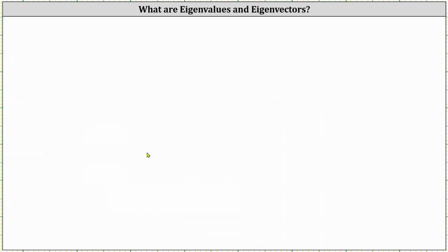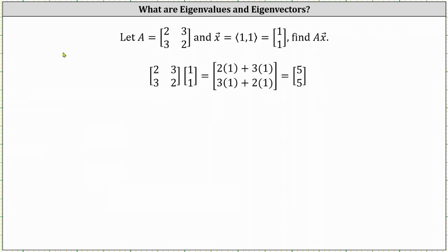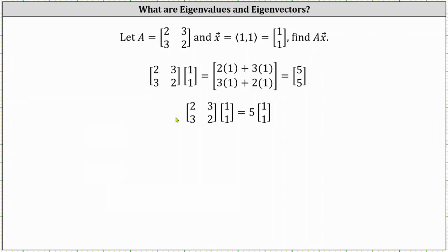To begin, let's consider matrix A and vector X and determine matrix A times vector X. Matrix A times vector X is equal to the vector [5, 5], which is a special result because matrix A times vector X is equal to a scalar multiple of vector X. In this case, matrix A times vector X is equal to five times vector X.